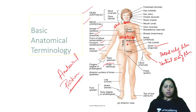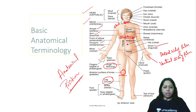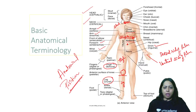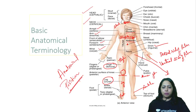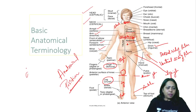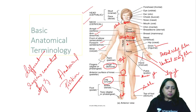In the lower limb you have the thigh region, the knee, and the leg — the portion below the knee is called the leg. Don't call the entire lower limb 'leg'; the upper portion is the thigh region, and this is the foot region. There is also the ankle joint and the knee joint and the hip joint. Various joints connect the different regions of the body.